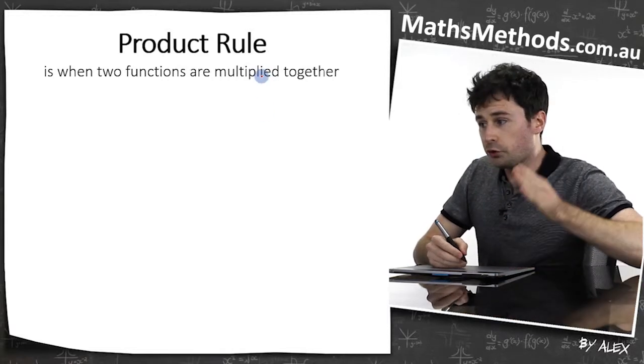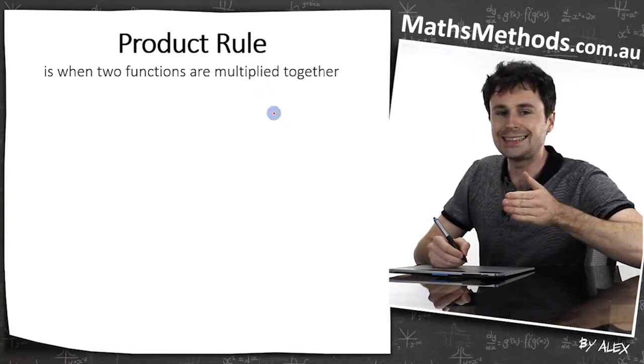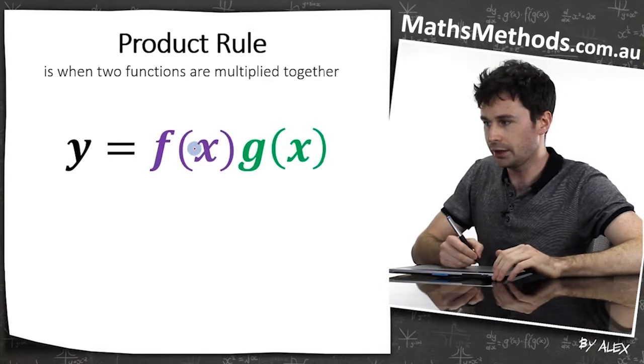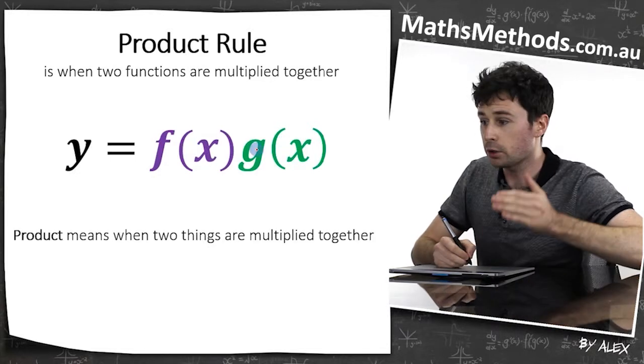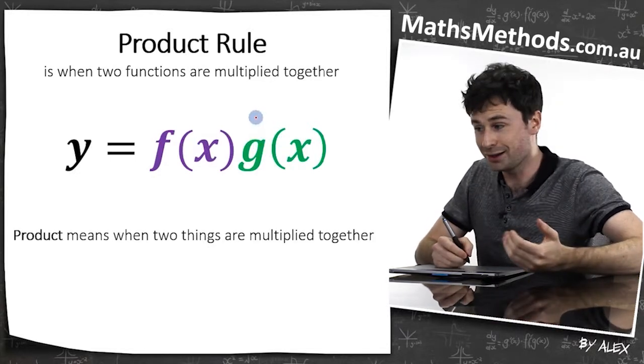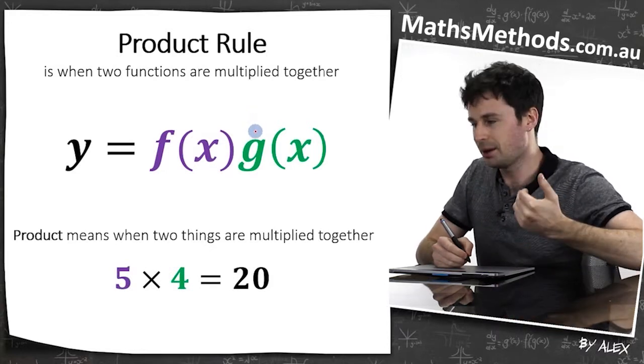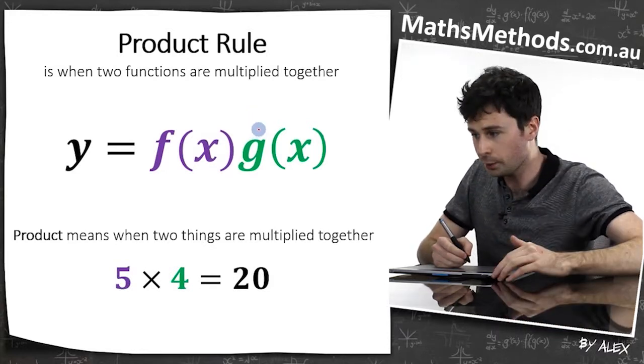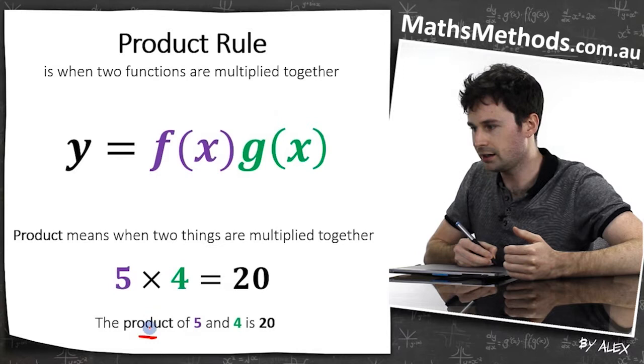The product rule is used when two functions are multiplied together, something like this, where you've got f of x times g of x. Product actually means when two things are multiplied together. So if you've got five times four, the product of this is 20. So product, you should be thinking multiply.